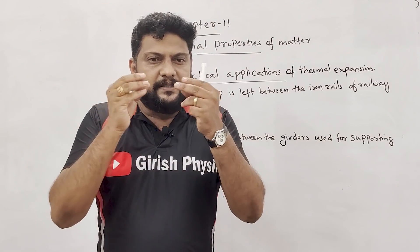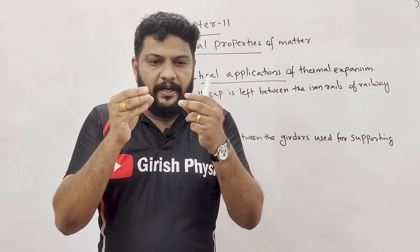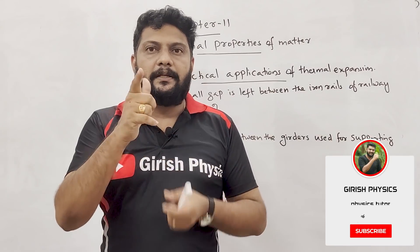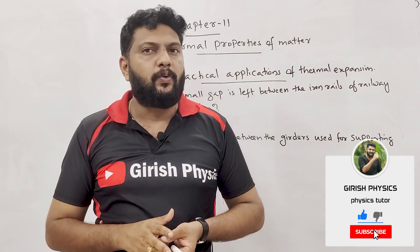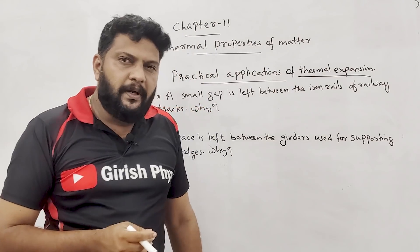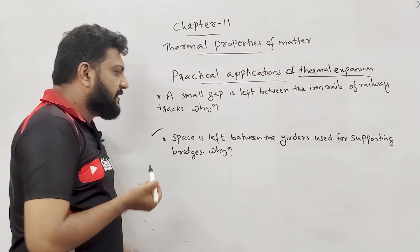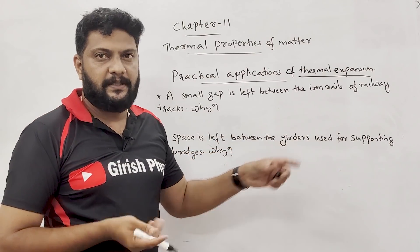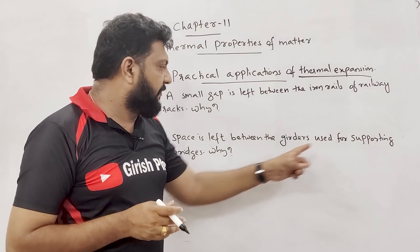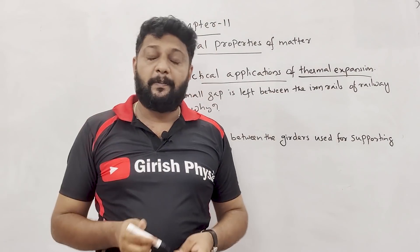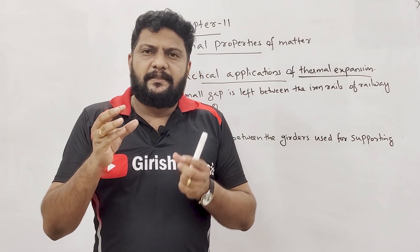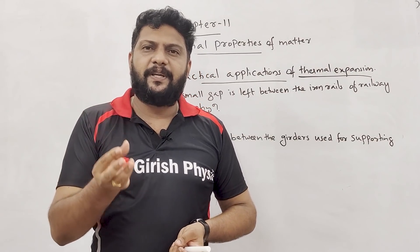In summer, the rails expand due to thermal expansion. Space is also left between supports used for bridges — why? Due to thermal expansion.